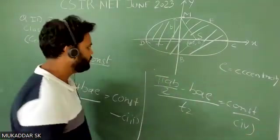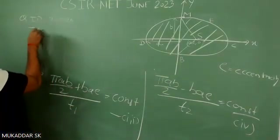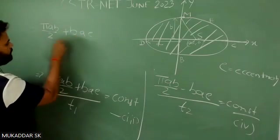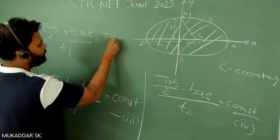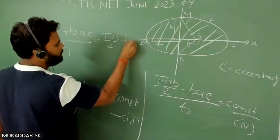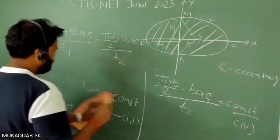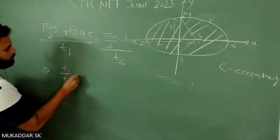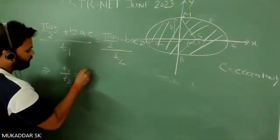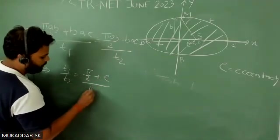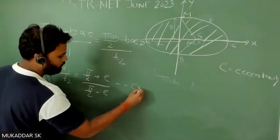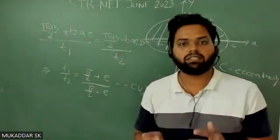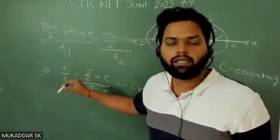Both are equal to the same constant, so we can equate the two equations: (πab/2 + bae)/t1 = (πab/2 − bae)/t2. From here we can get the ratio t1/t2. Since ab is common and cancels, we get t1/t2 = (π/2 + e)/(π/2 − e). This is equation 5. But the question asks for the time difference, not the ratio.